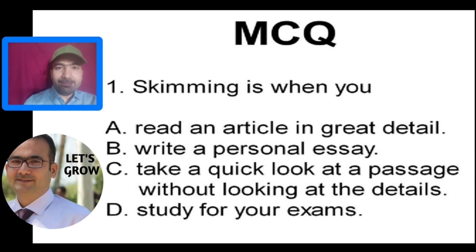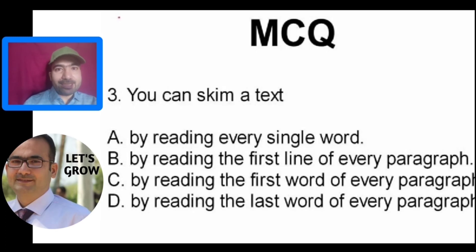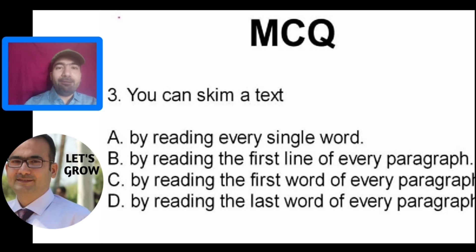The answer to question two is C — taking a quick look at a passage without looking at the details. Question three: you can skim a text by — A) reading every single word, B) reading the first line of every paragraph, C) reading the first word of every paragraph, D) reading the last word of every paragraph. The answer is option B — by reading the first line of every paragraph, so that you can guess what is in the details or what comes in the later part of the paragraph.